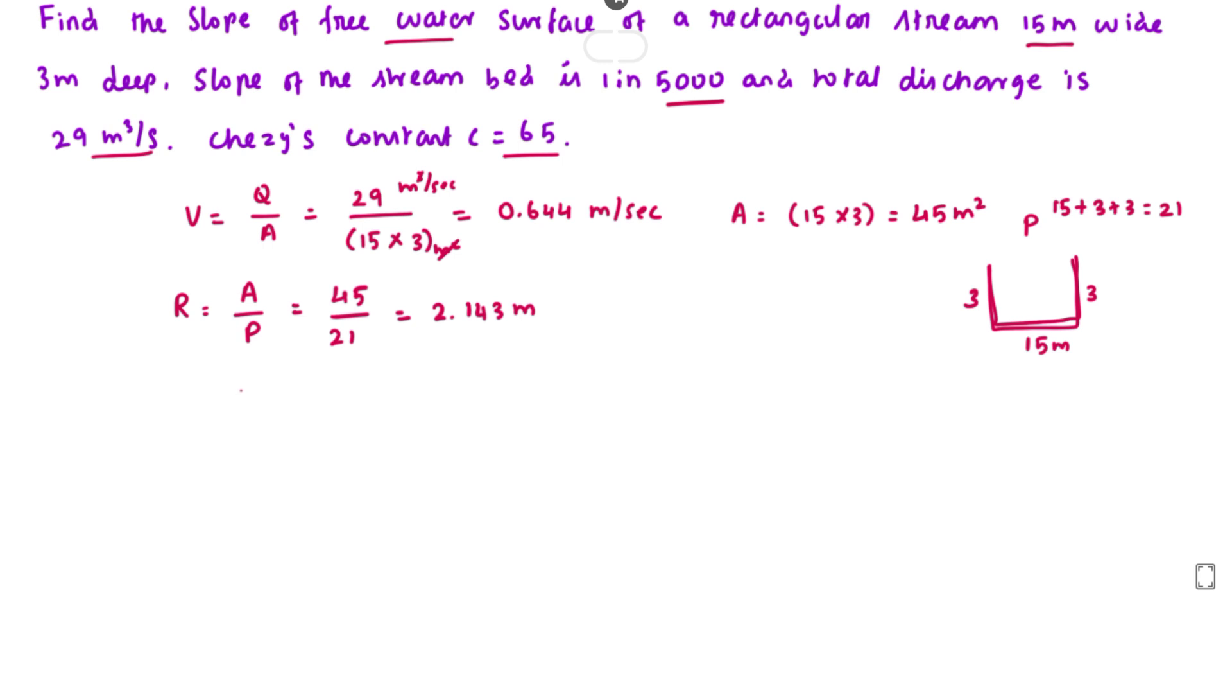Now we find the slope of the energy grade line using Chezy's formula: S = V²/(C²R). V is 0.644 squared, C value is 65 squared, and R is 2.143.